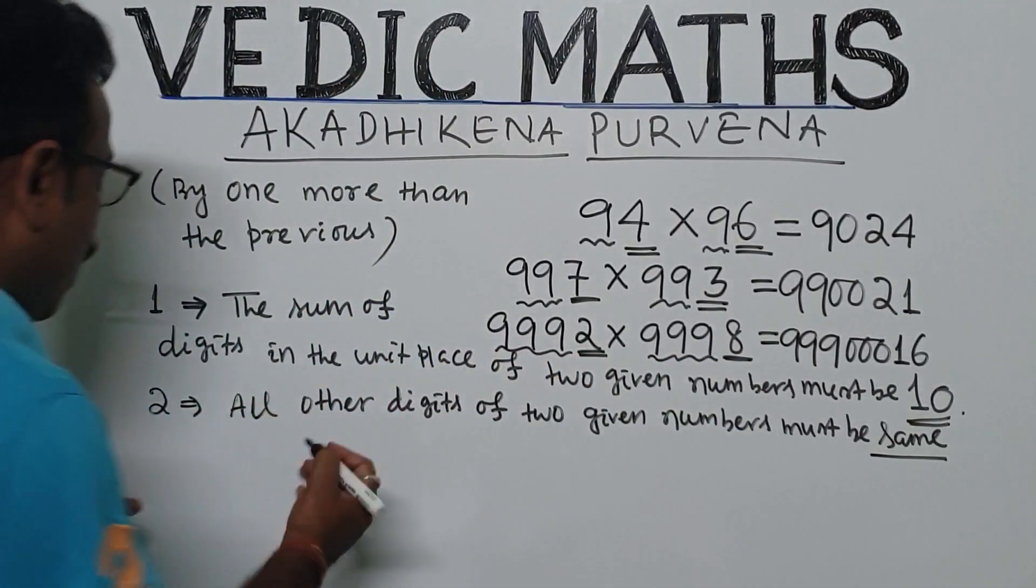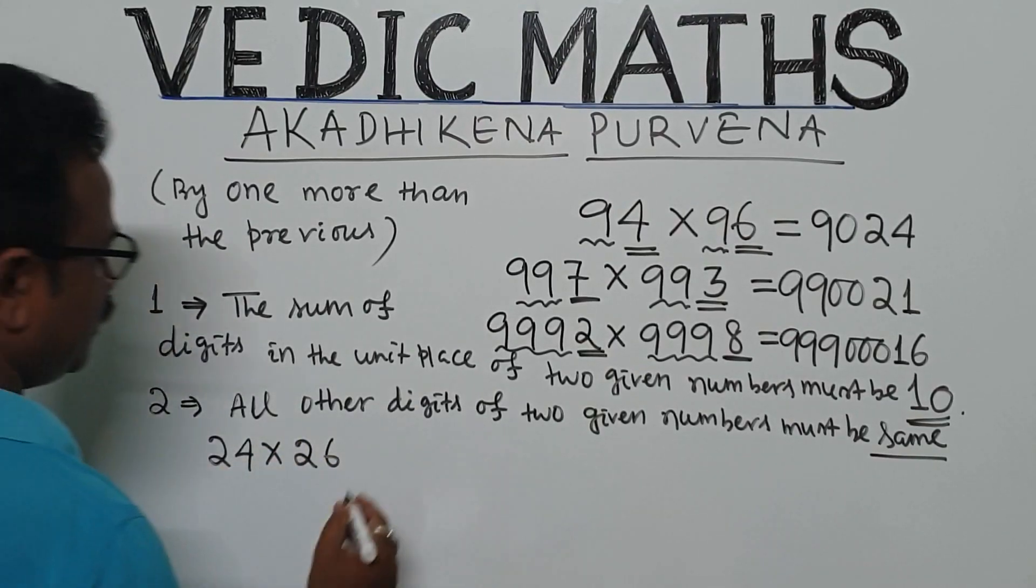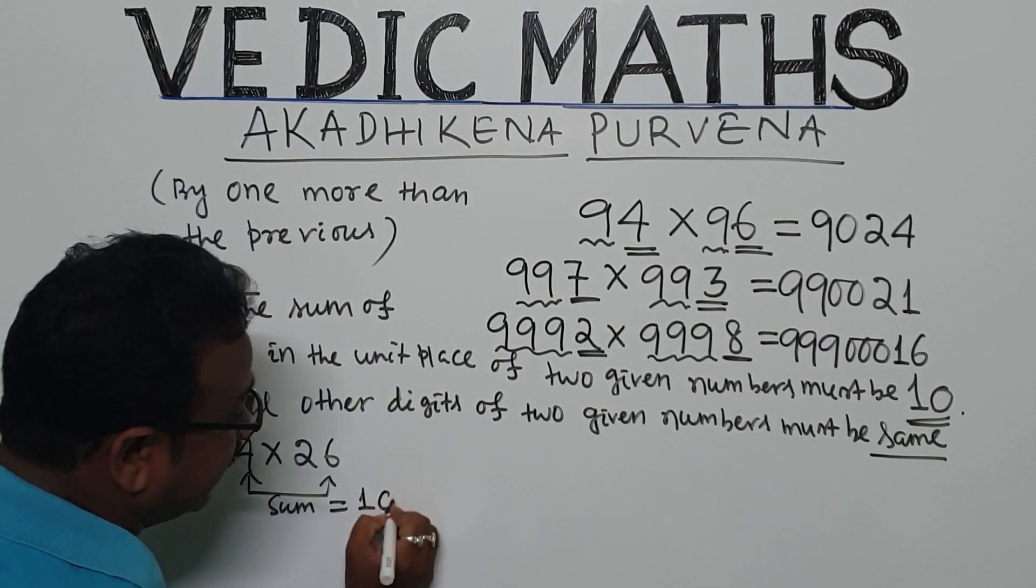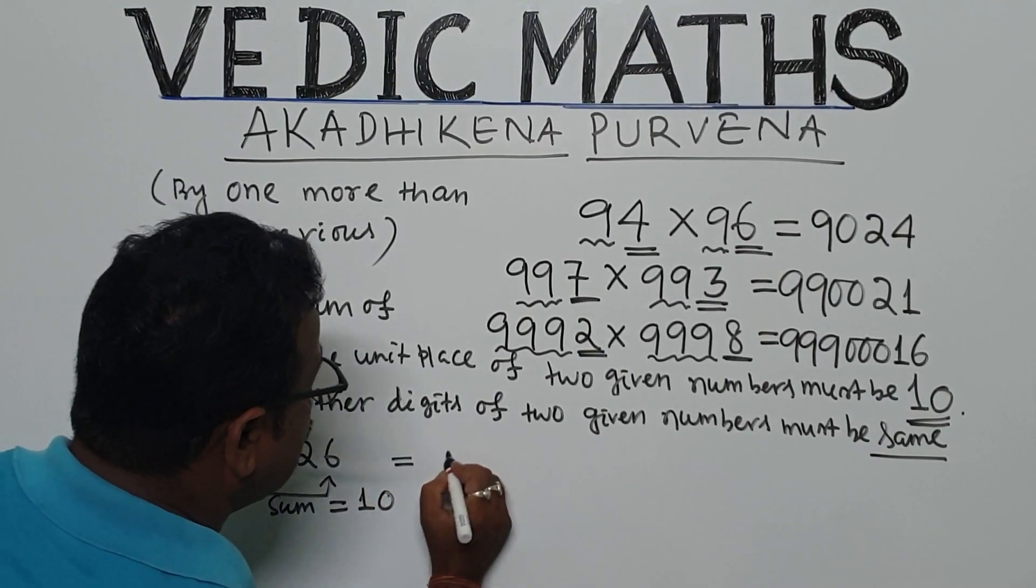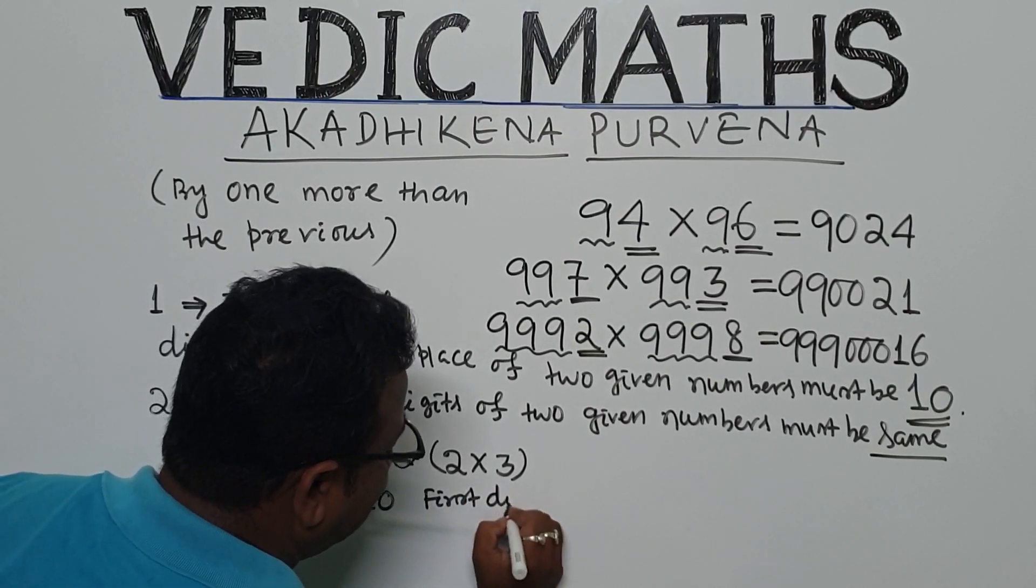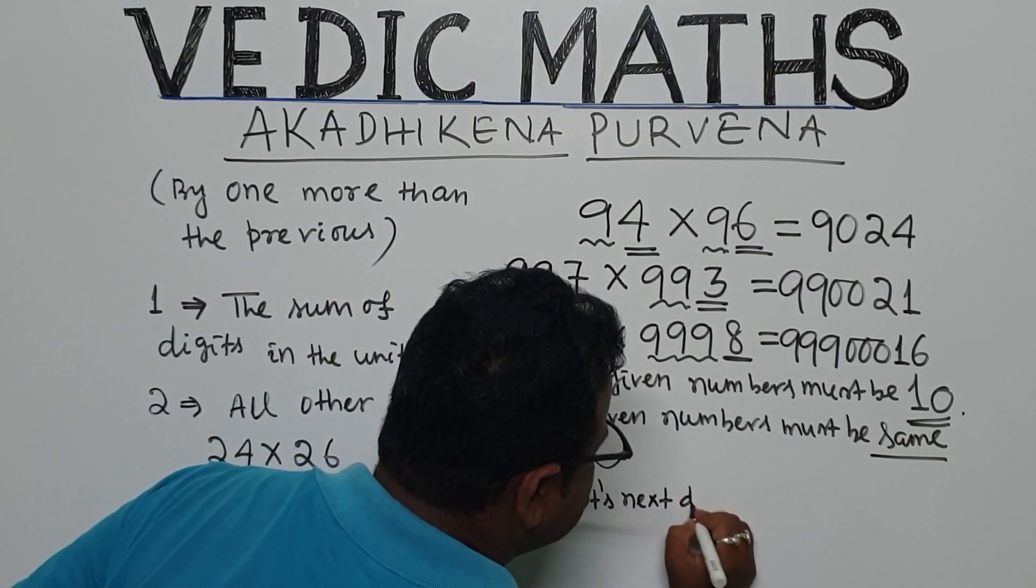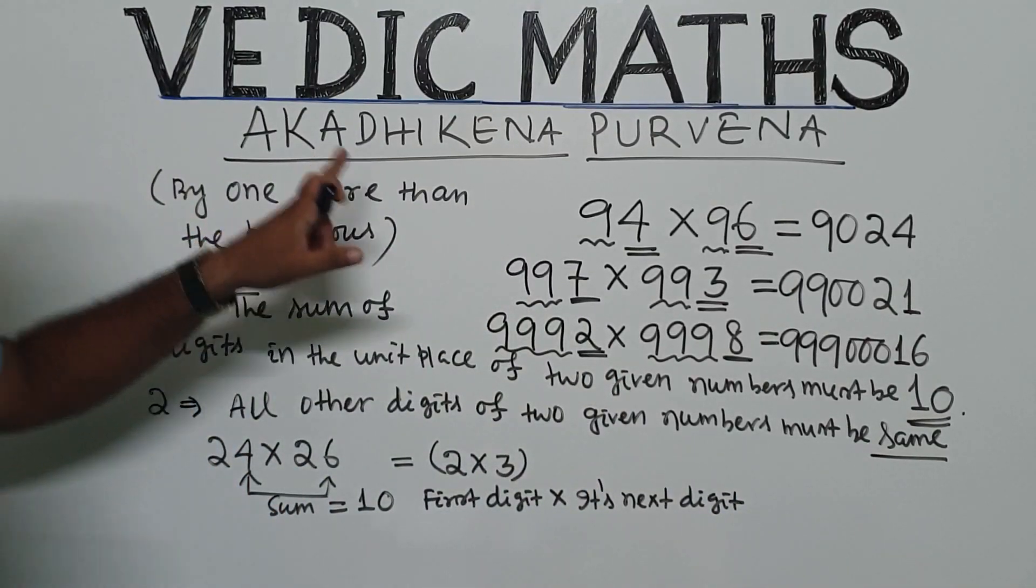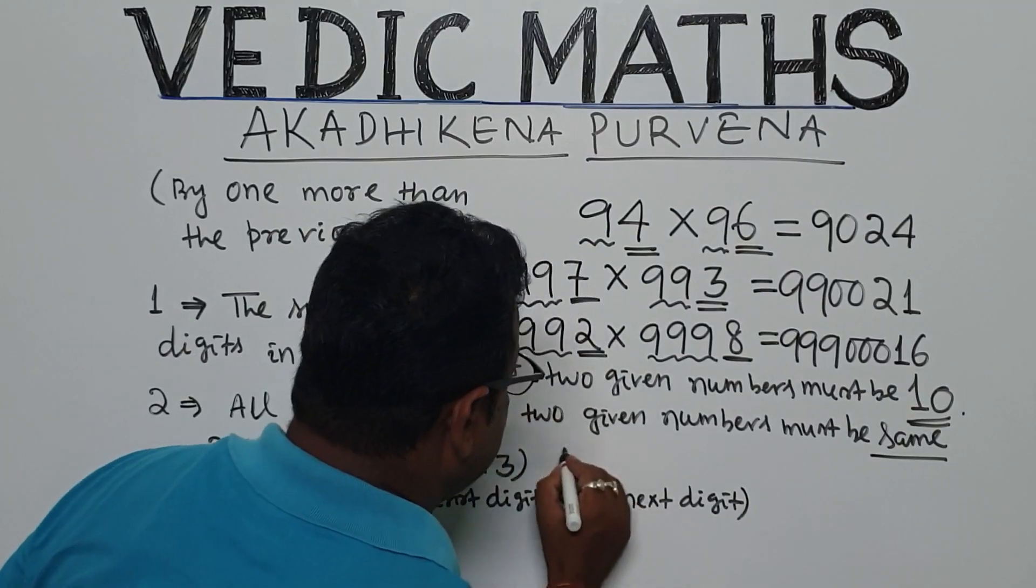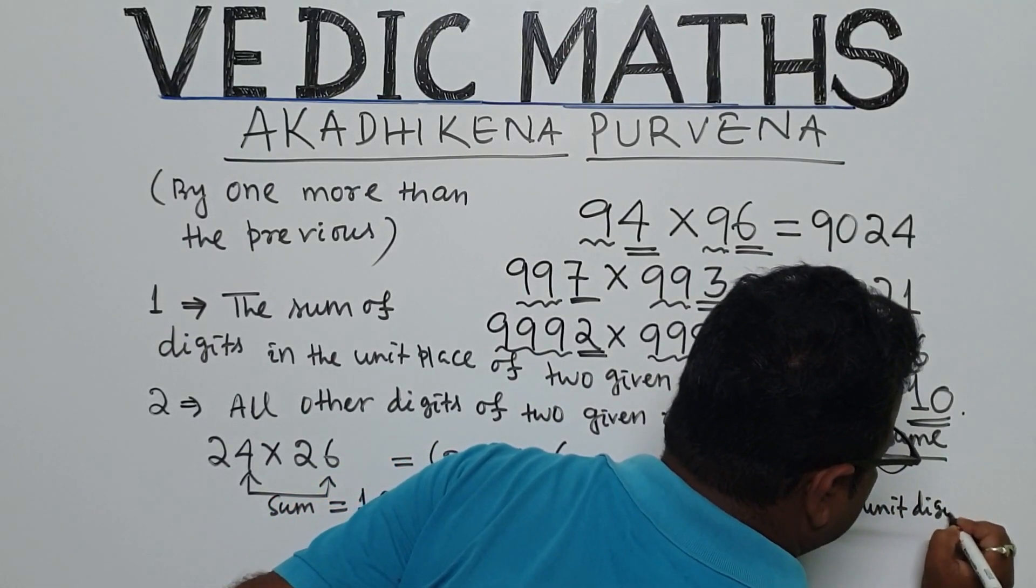Now, how we are getting the product? Suppose given 24 into 26. Here 4, 6 unit place, the sum is equal to 10. Now it is equal to 2 into 3. So first digit into its next digit, or we can say 1 more than the previous. Previous is 2, its next digit is 3. This is then your product of unit digits.